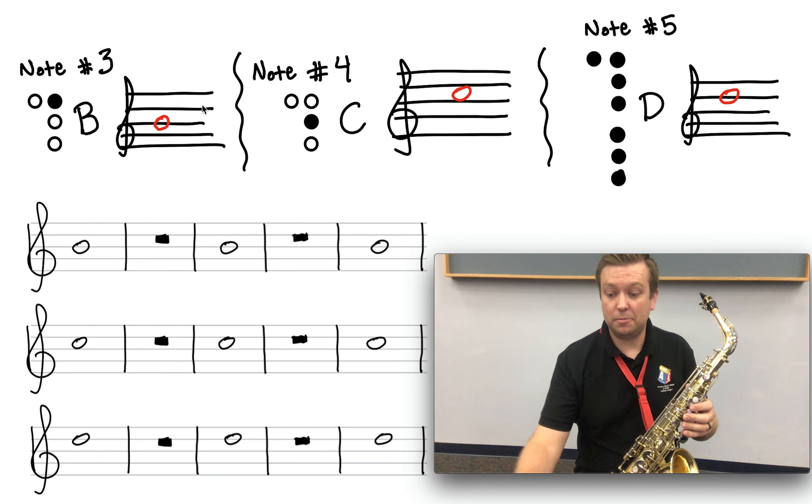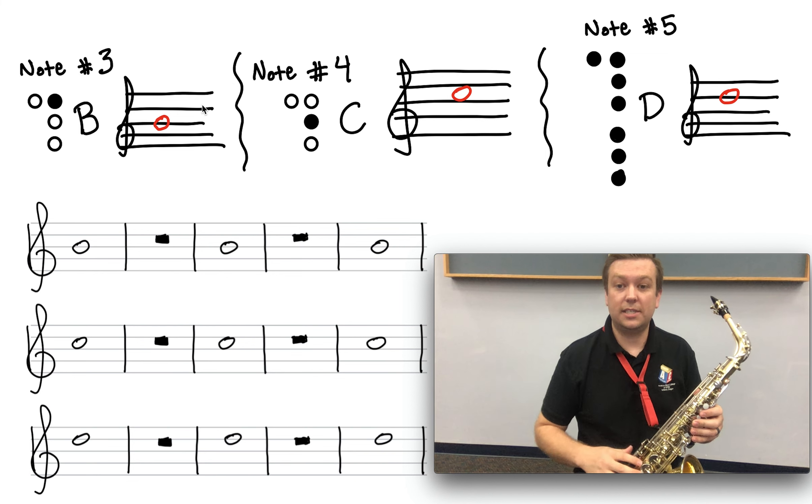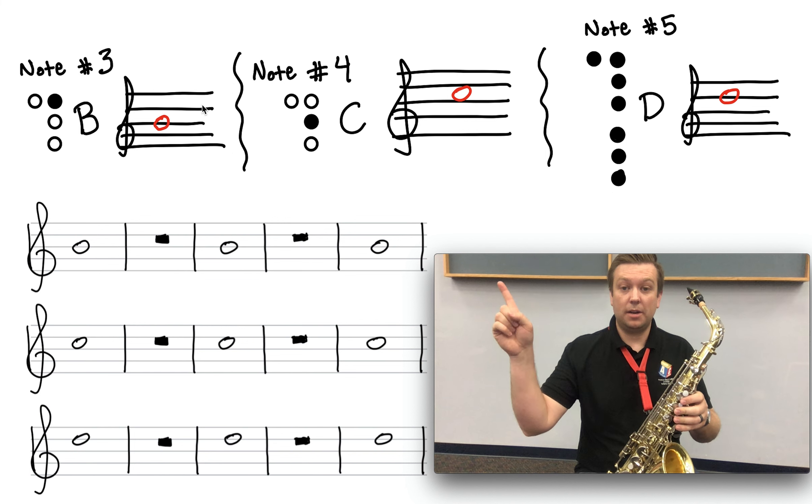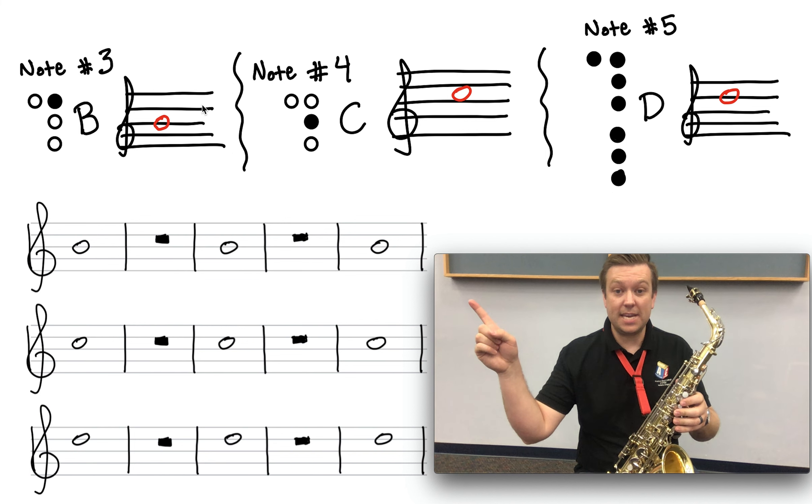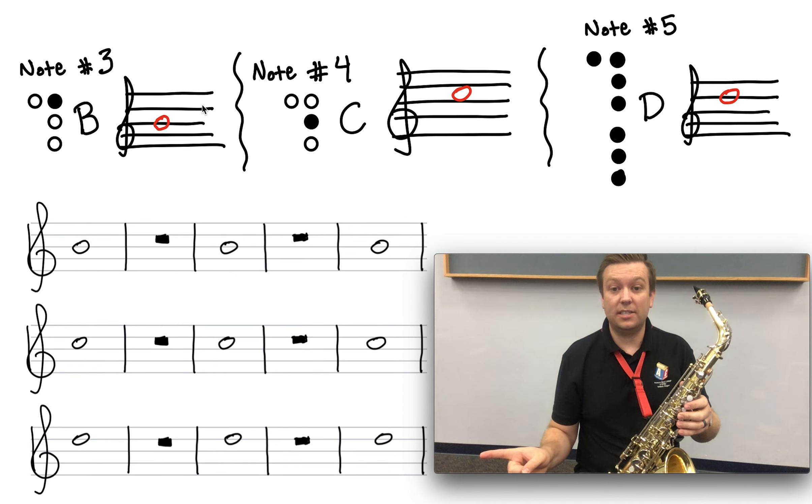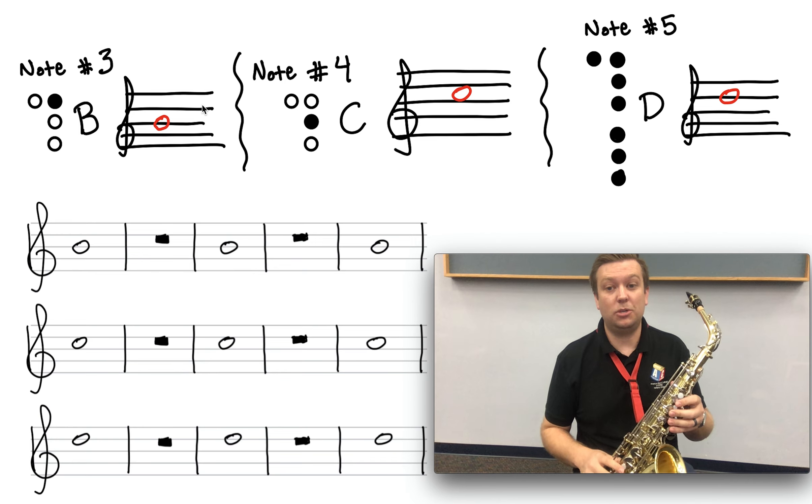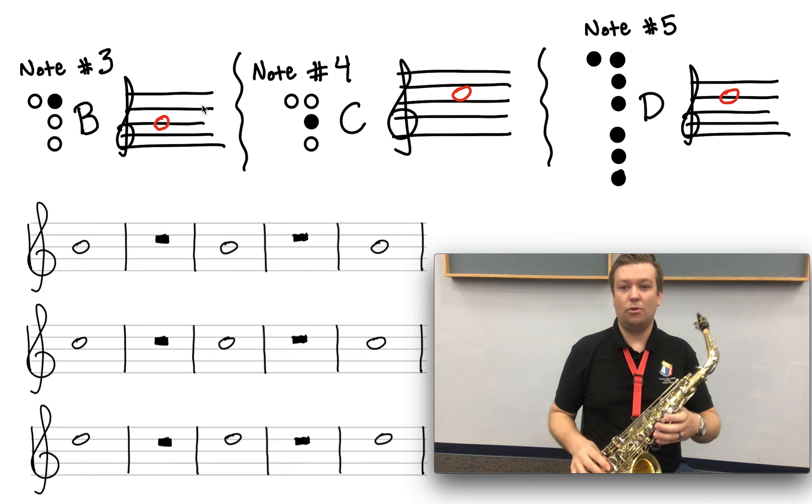We're going to do it the same as before. I got my metronome right here, and you're going to hear all these clicks, like 60 beats per minute. We're going to play the first line, all Bs. Second line, all Cs. Third line, all Ds. And there's four counts of rest, or a whole rest, in between each whole note, or four counts of sound.